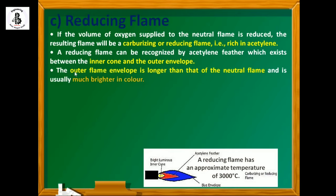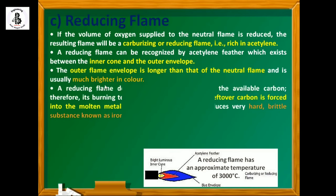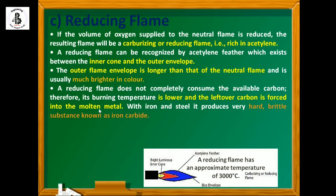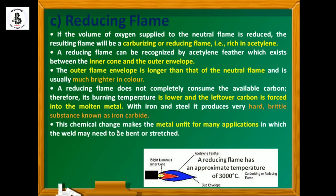The outer flame envelope is longer than that of the neutral flame and is usually much brighter in color. A reducing flame does not completely consume the available carbon. Therefore, its burning temperature is lower and leftover carbon is forced into the molten metal. With iron and steel, it produces a very hard, brittle substance known as iron carbide.